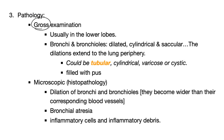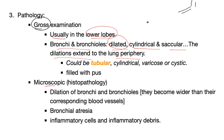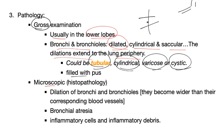Pathology — gross findings: the problem is usually in the lower lobe. Bronchi and bronchioles are dilated; it could be cylindrical or saccular, with dilatation extending to the periphery. Normally bronchi taper as you go peripherally; if you see dilatation near the periphery, this is bronchiectasis. Four types: tubular, cylindrical, varicose, and cystic. They are filled with pus — suppurative, purulent, foul-smelling material.